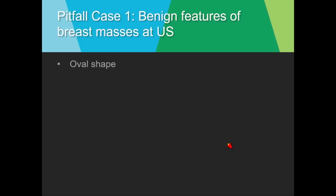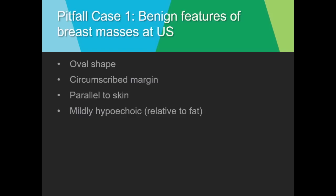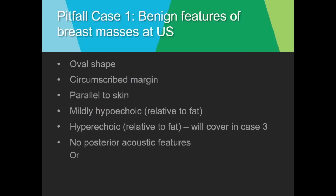To quickly review benign features of breast masses at ultrasound: oval shape, circumscribed margin, parallel to the skin surface, mildly hypoechoic relative to fat, hyperechoic relative to fat — and we'll discuss hyperechoic masses in case three. No posterior acoustic features, or posterior acoustic enhancement as in this case.